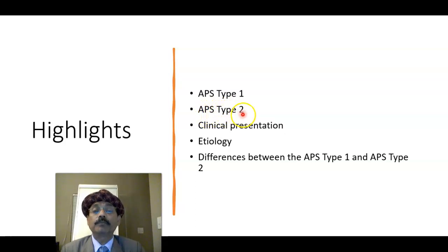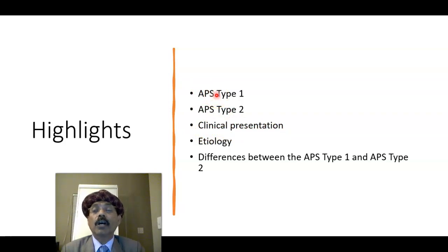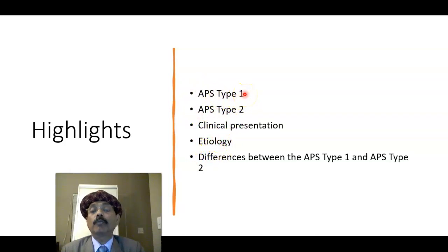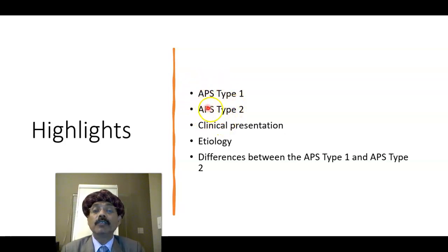In APS2 clinical presentation: APS type 1 includes mucocutaneous candidiasis, hypoparathyroidism, and Addison's disease; APS type 2 includes Addison's disease and primary adrenocortical insufficiency plus diabetes. Regarding etiology, APS type 1 is an autosomal recessive disease. The cause of APS type 2 is not known but may be associated with some hereditary factors. Both diseases are uncommon, with APS type 1 being even rarer than APS type 2.